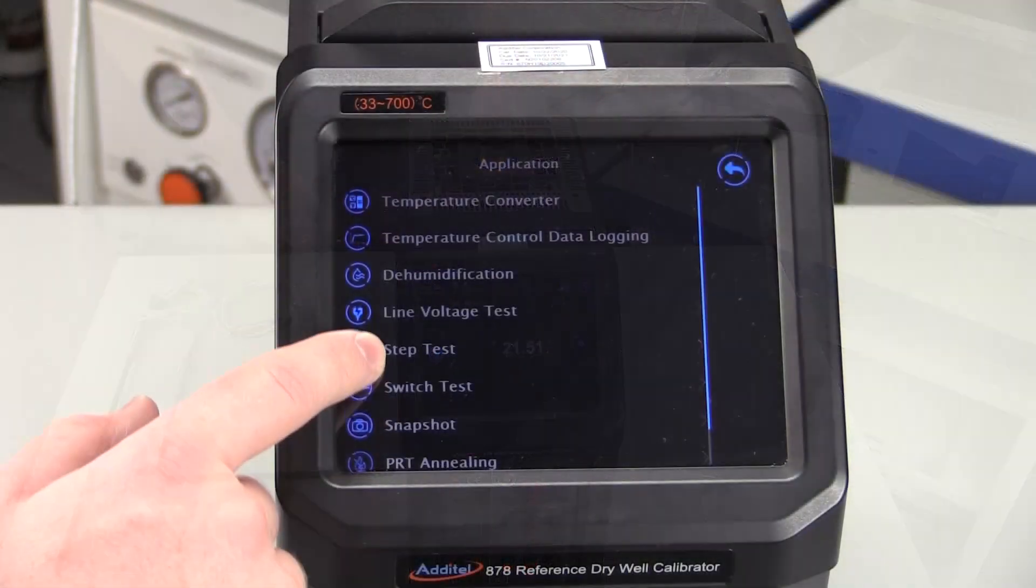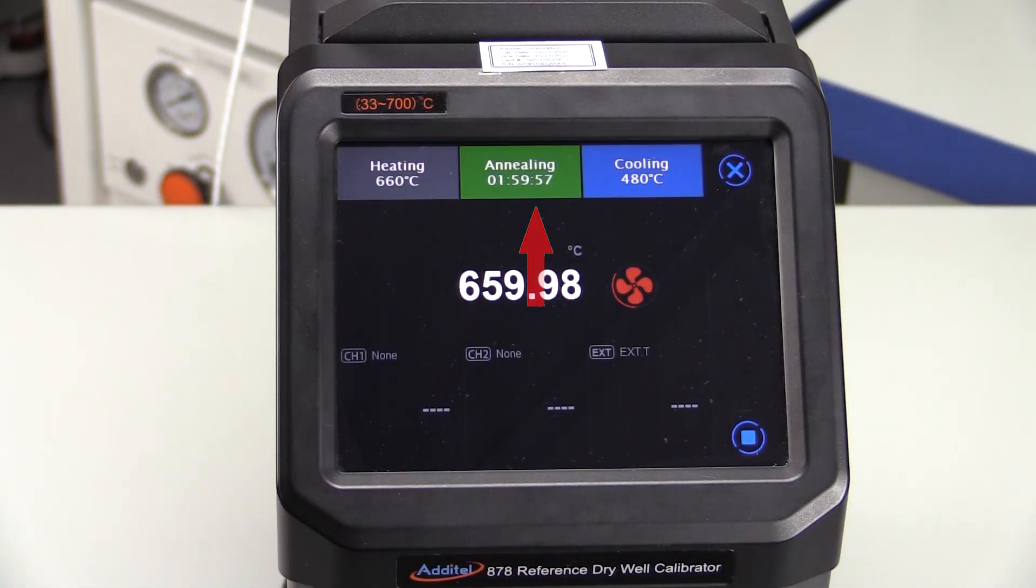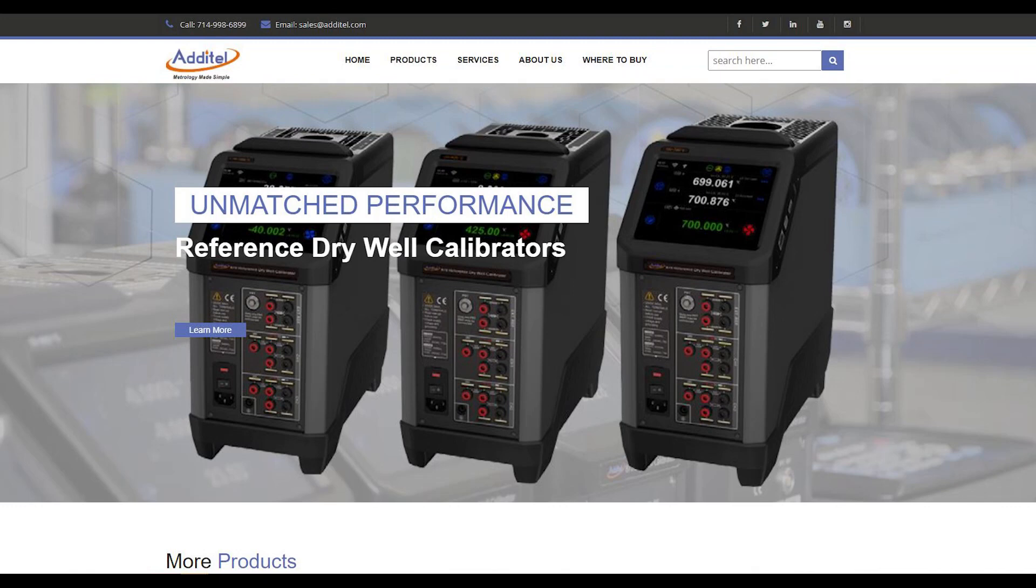Additel is making metrology simple with innovative products like the Additel 878-700 and its automated annealing feature. For more information or videos about this or other great Additel products, please visit us at additel.com. Thank you.